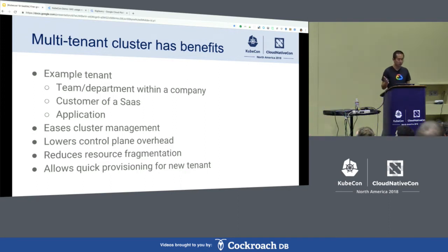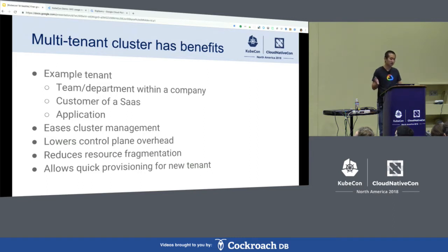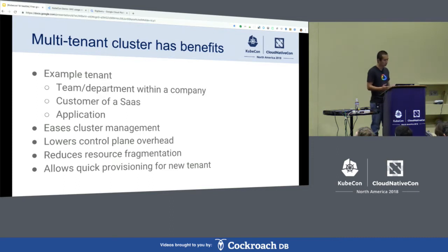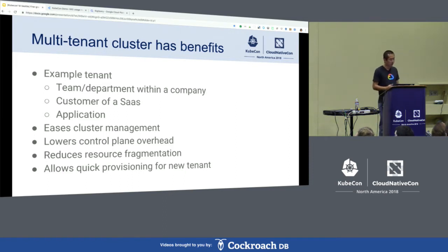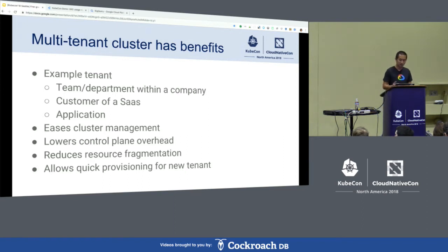One of the options is to use what we call a multi-single-tenant model, where you create a separate cluster for each party and use a cluster as a boundary. The other is to allow multiple parties to share a single multi-tenant cluster, using, for example, Kubernetes namespace as the tenant boundary. While in certain cases, a multi-single-tenant cluster does offer some advantages, such as better isolation, it comes at a cost.